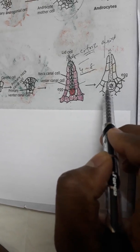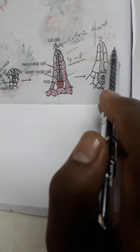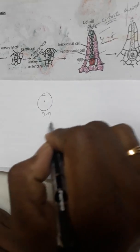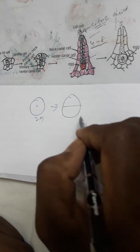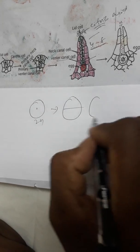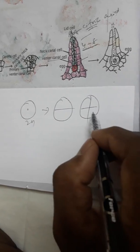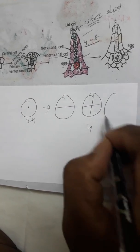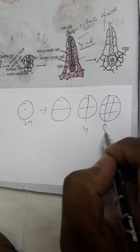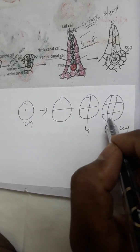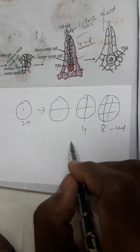Now, the egg is formed at venter. This is the zygote. Zygote goes to division, and after one more division, quadrant stage, and after octant stage, eight cell stage, and finally produces sporophyte.